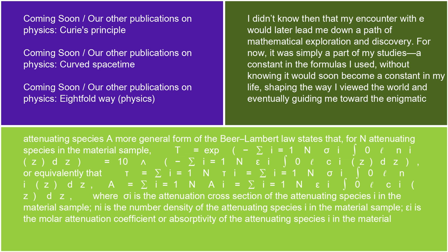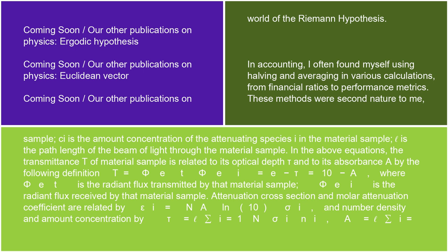εᵢ is the molar attenuation coefficient or absorptivity of attenuating species i. cᵢ is the amount concentration of attenuating species i. ℓ is the path length of the beam through the material sample. In the above equations, the transmittance T of the material sample is related to its optical depth τ and absorbance A by: T = Φ_e,t / Φ_e,i = e^(−τ) = 10^(−A), where Φ_e,t is the radiant flux transmitted and Φ_e,i is the radiant flux received.